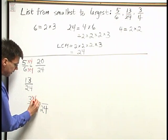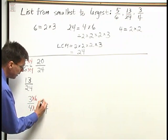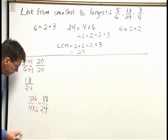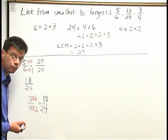3 times 6, then, I multiply above. 3 times 6 gives me 18. 3 4ths can be rewritten as 18 24ths.